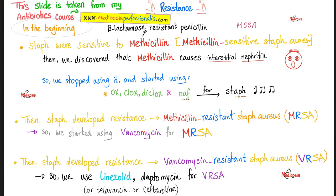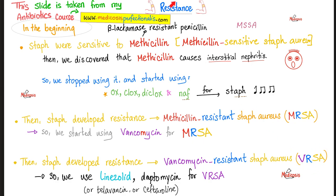But then Staph aureus became resistant to methicillin and its alternatives — oxacillin, cloxacillin, dicloxacillin, and nafcillin. MRSA is by definition resistant to all of these. So do not give oxacillin to MRSA — the name tells you it is resistant to the entire methicillin family. Instead, give vancomycin. But it got worse: Staph developed resistance to vancomycin too, creating Vancomycin-Resistant Staph aureus.